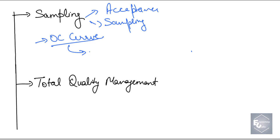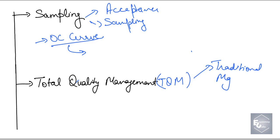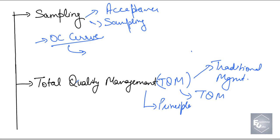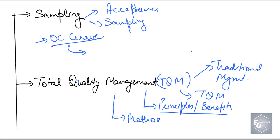Then comes Total Quality Management, that is TQM. In this part we will learn about what the traditional management system was and how TQM evolved — what the need was that moved us toward TQM. We will learn about the different principles and benefits of implementing TQM rather than the traditional management process, and the different methods of TQM that are applied for maintaining it.